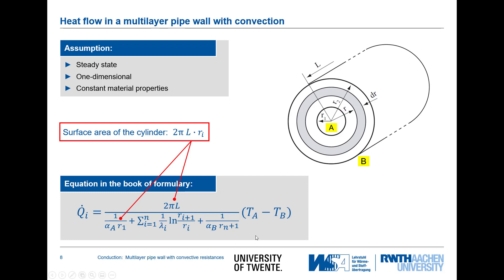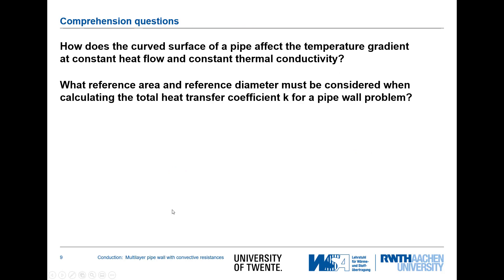In the book of formularies, rather than using the heat transfer coefficient k, we directly calculate the heat flux as the driving temperature potential divided by the sum of all resistances. The reference area is included in that formulation.